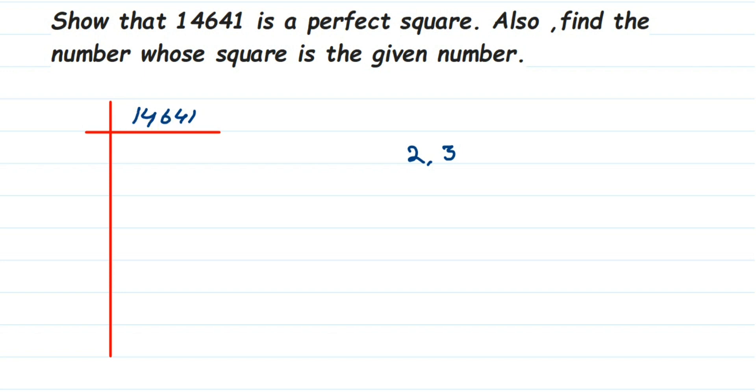1 plus 4 is 5, 5 plus 6 is 11, 11 plus 4 is 15, 15 plus 1 is 16. So when you add each digit, I got 16. And 16 is not divisible by 3, which means this whole number is not divisible by 3. The next number is 4—this number is not divisible by 4 because it's an odd number.